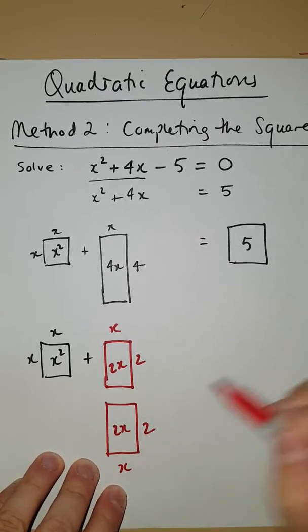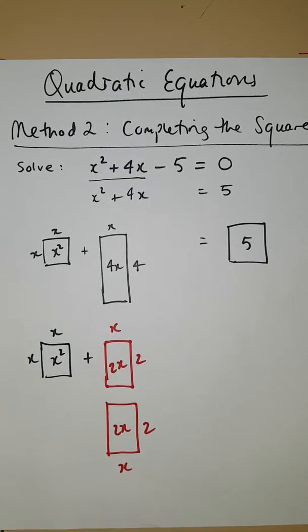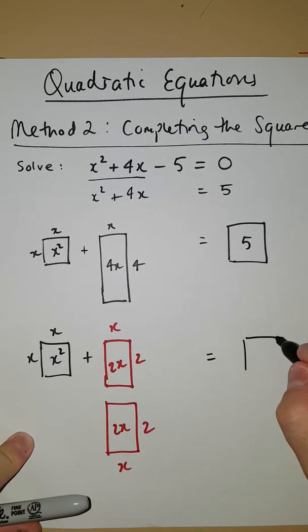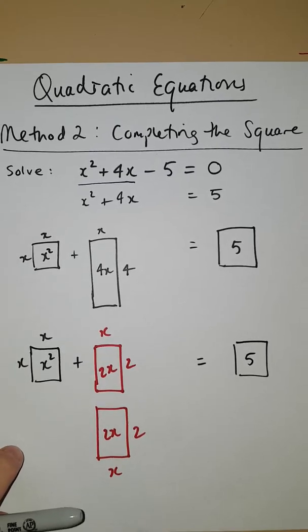Okay, again over the right hand side I still have this square of area 5.